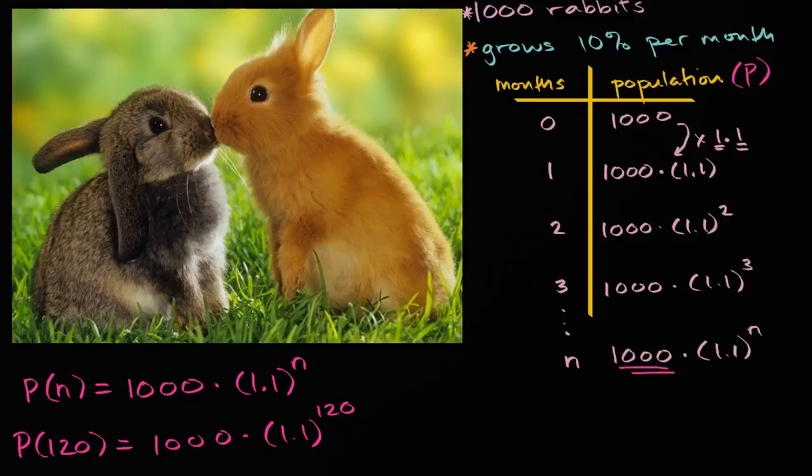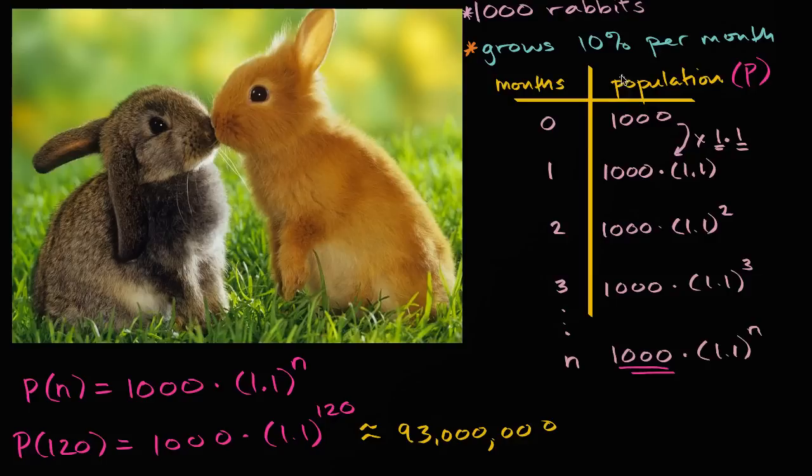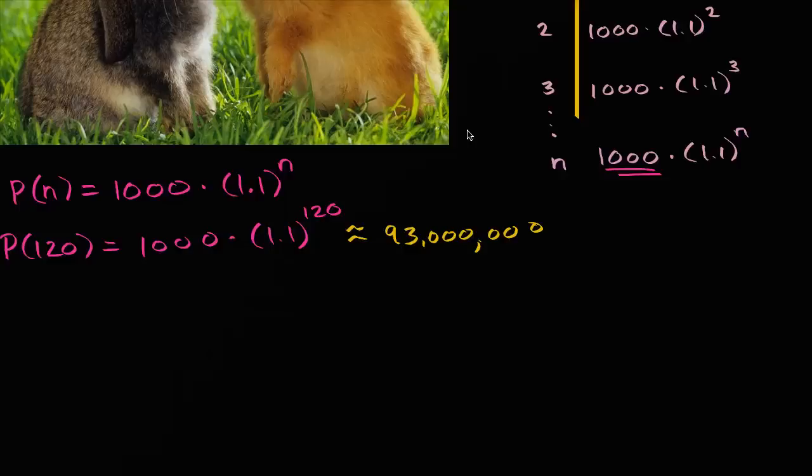Let me write that down. So we started with 1,000, and we're going to have approximately 93 million rabbits. And so we grew by a factor of 93,000 over 10 years. So over another 10 years, we'd grow by 93,000 times this. And so you quickly realize 10% per month is quite fast. And this amount seemed extremely fast, but this is actually not outlandish for a population of rabbits that are not limited by space or predators or food.